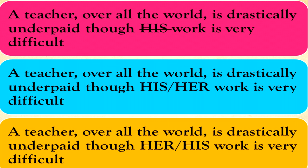We should dwell on the ways of avoiding gender-biased English. The first way is using parallel pronouns such as he or she. Let's reconstruct the above-mentioned sentence: 'A teacher all over the world is drastically underpaid, though his work is very difficult.' That is biased English — it is discriminating, especially given that the number of women teachers is much greater than the number of males. So instead, we should use parallel pronouns he and she, or she and he. This is the first way of avoiding biased English structures.